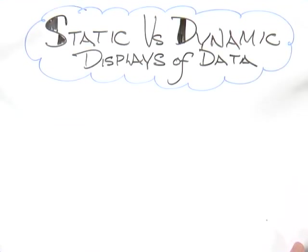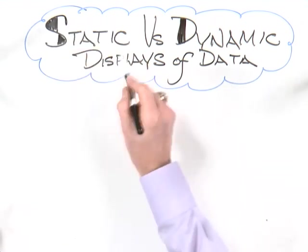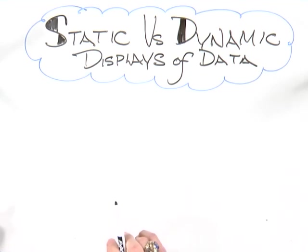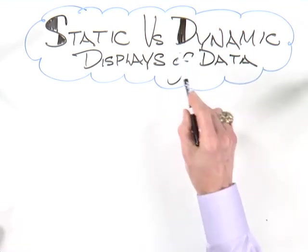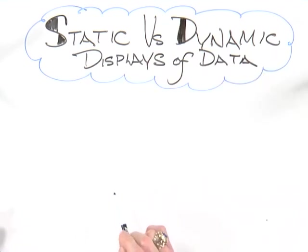A key aspect of your improvement efforts is being able to take data, analyze it, and understand the variation that lives in your data. You really have two choices. Many people have been acquainted with static displays of data, but what we want to talk about is the difference between static and dynamic.